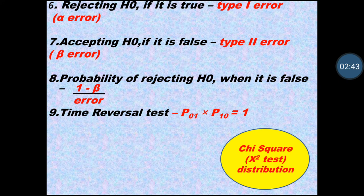For the time reversal test, in fill-in-the-blank or match-the-following, if time reversal test is given, the answer is P01 multiplied by P10 equals 1. You can match this as the correct answer.